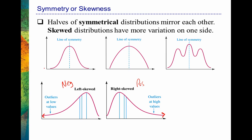The terminology I tend to use is negative and positive skew, though our textbook uses left and right skew. You can remember negative skew because the tail is pointing toward the negative end of the number line. And for positive skew, the tail of the distribution is pointing toward the positive numbers. That's positive skew.